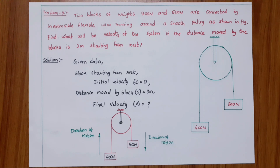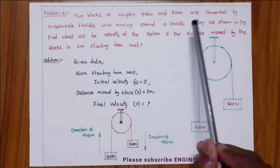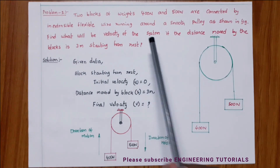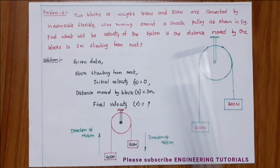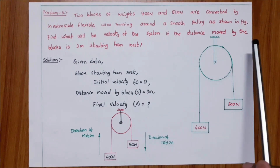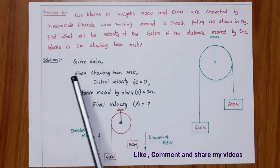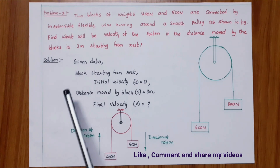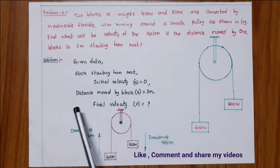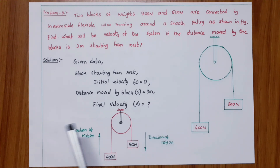Problem on work-energy method: two blocks of weight 400 newton and 500 newton are connected by an inextensible flexible wire running around a smooth pulley. Find the velocity of the system if the distance moved by the blocks is three meters starting from rest. Given data: initial velocity u equals zero, distance s equals three meters. We need to calculate final velocity v.